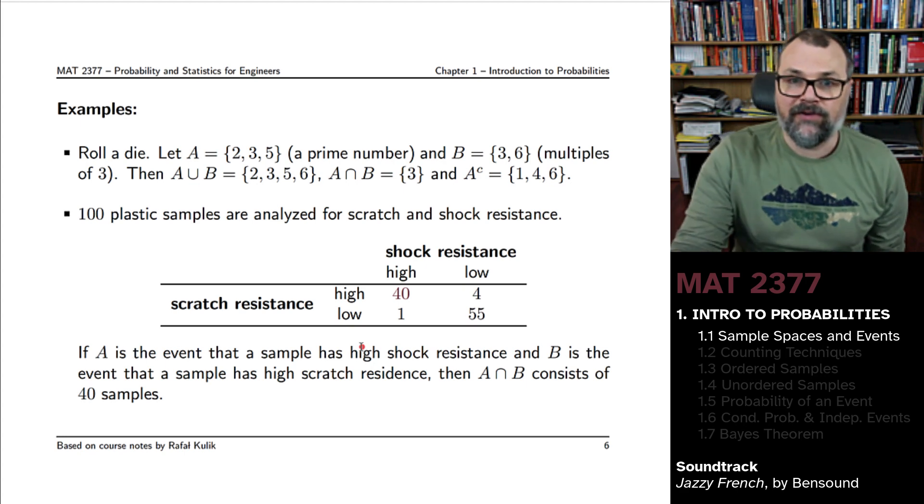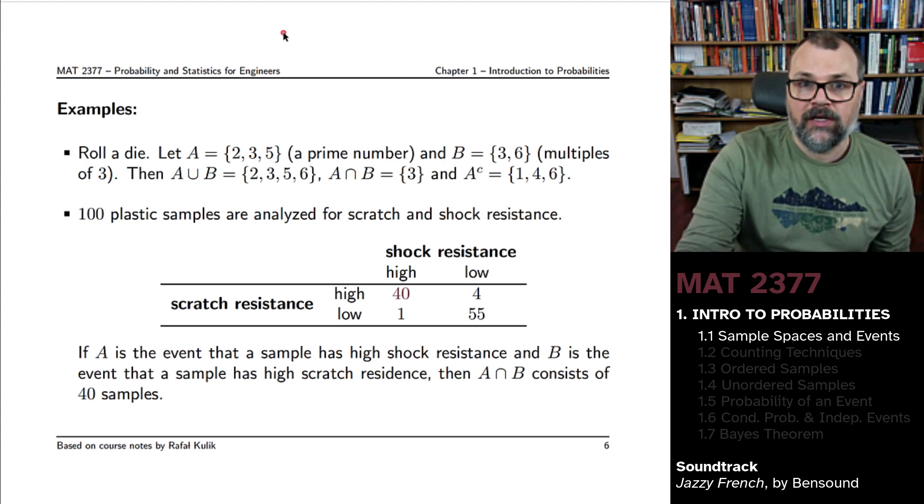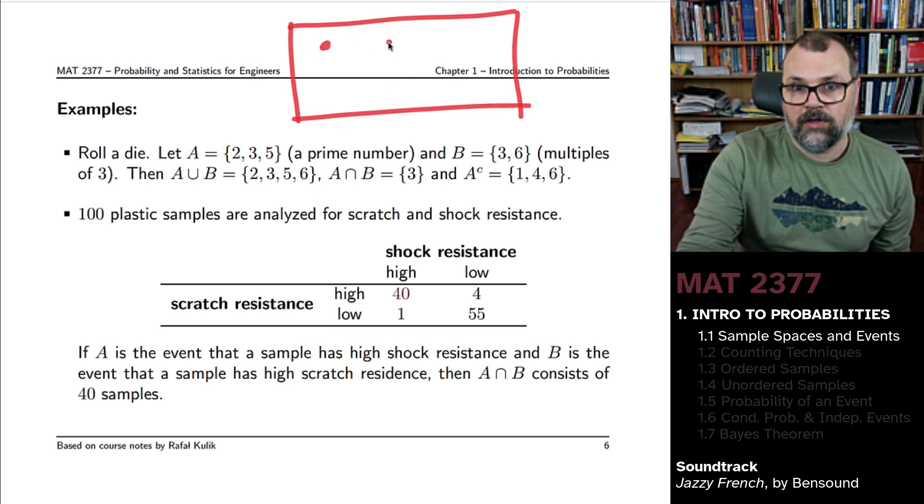So let's try to draw a little box here to give us an idea as to what will be happening. Here's my space of outcomes, my sample space: one, two, three, four, five, six.